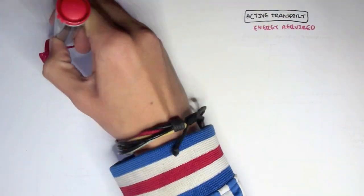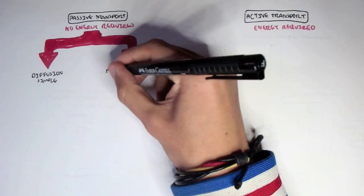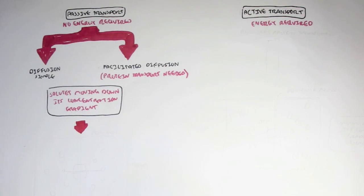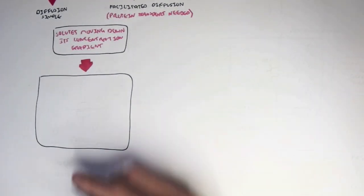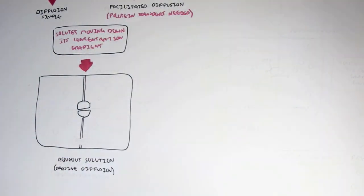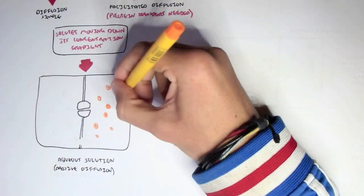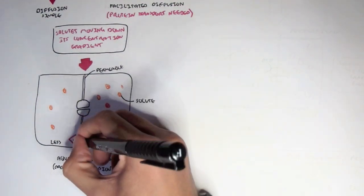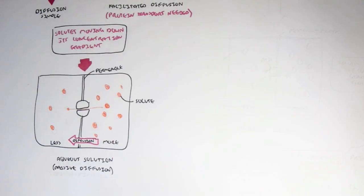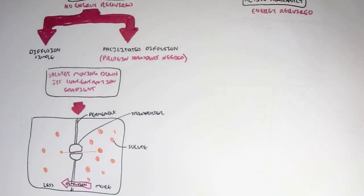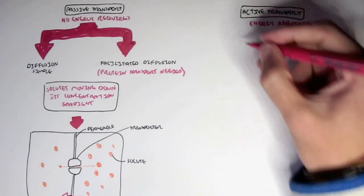There are two types of passive transport: simple diffusion and facilitated diffusion, which requires a protein transporter. Passive diffusion is where solutes move down their concentration gradient. If we have a container with a permeable membrane and an aqueous solution, where the solutes are more concentrated on the right-hand side, the solutes will move from the area of high concentration to lower concentration — from right to left. This is facilitated diffusion, which requires no energy.